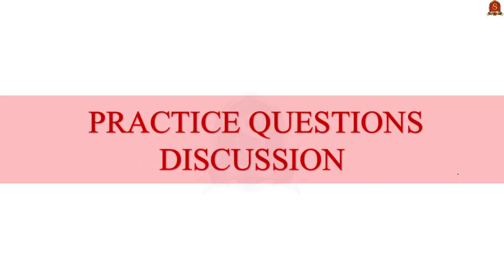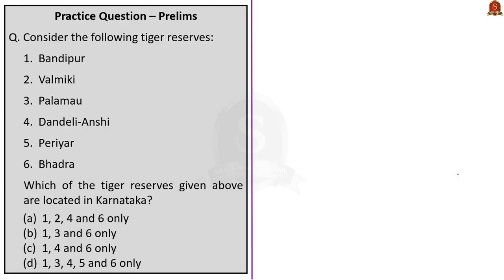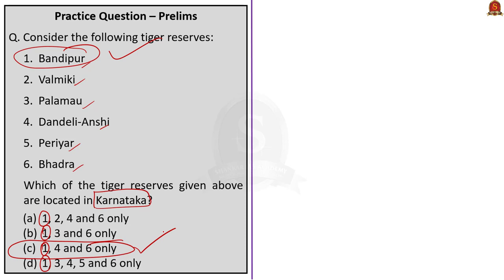Now let us move on to the practice prelims question discussion. First question: Consider the following tiger reserves — 1. Bandipur, 2. Valmiki, 3. Palamau, 4. Dandeli-Anshi, 5. Periyar, 6. Bhadra. Which of the tiger reserves given above are located in Karnataka? Option A: 1, 4 and 6 only. Option B: 1, 3 and 6 only. Option C: 1, 4 and 6 only. Option D: 1, 3, 4, 5 and 6 only. The answer is Option C — 1, 4 and 6 only: Bandipur, Dandeli-Anshi and Bhadra.